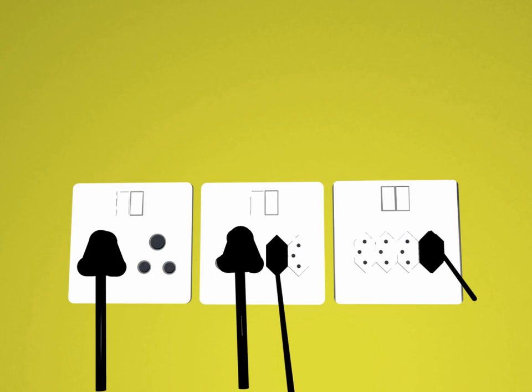Like Shuko and Europlug, the line and neutral pins are 19mm long and on centers spaced at 19mm. The pins have a diameter of 4.5mm, intermediate between Shuko and Europlug. In common with the Europlug there is an insulating sleeve around the base of the line and neutral pins.